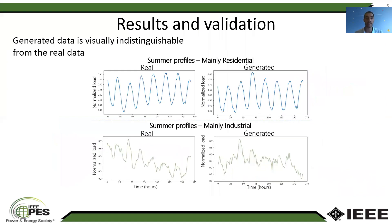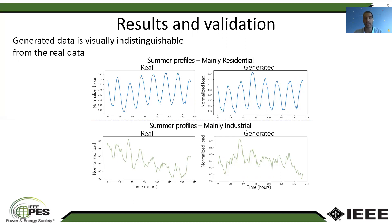Here we have an example of what the synthetic data looks like in comparison with the real data. All of these are summer profiles — mainly residential loads at the top and mainly industrial loads at the bottom. On the left are real profiles and on the right are generated profiles. We can see that visually they all look very similar and present the same types of behaviors. It's also important to highlight that the GAN doesn't simply copy real data, but actually generates completely new samples.